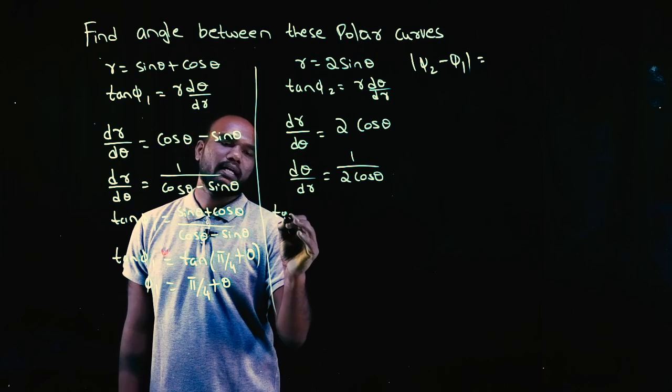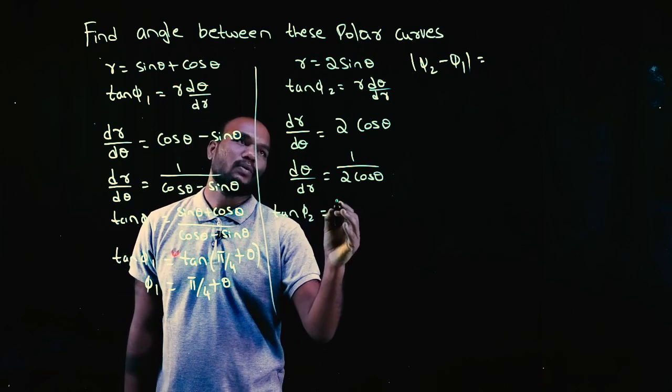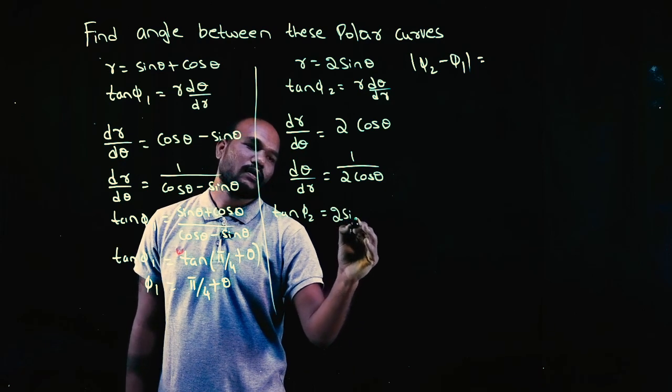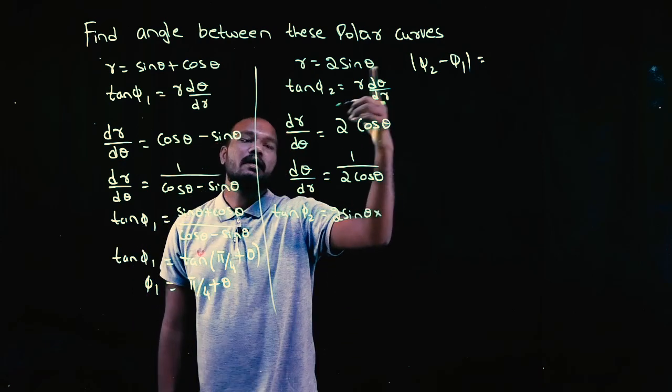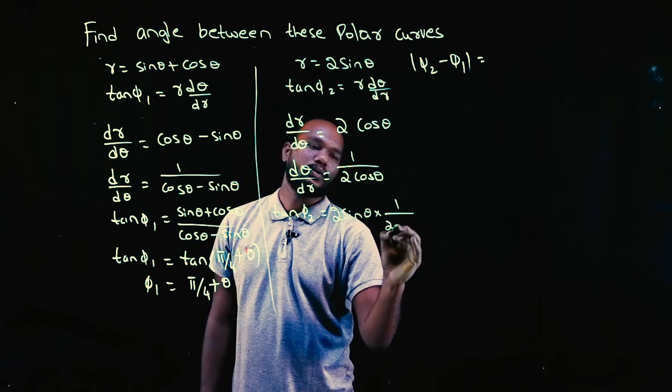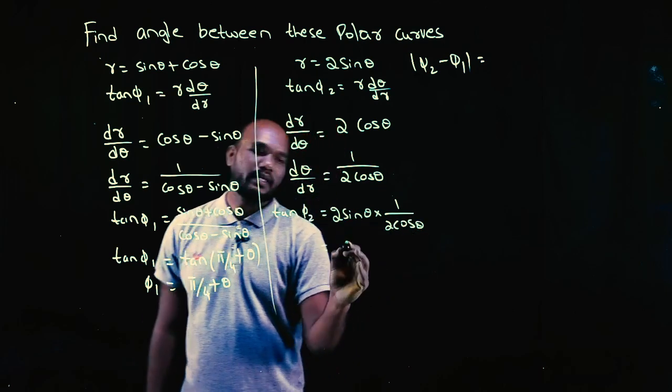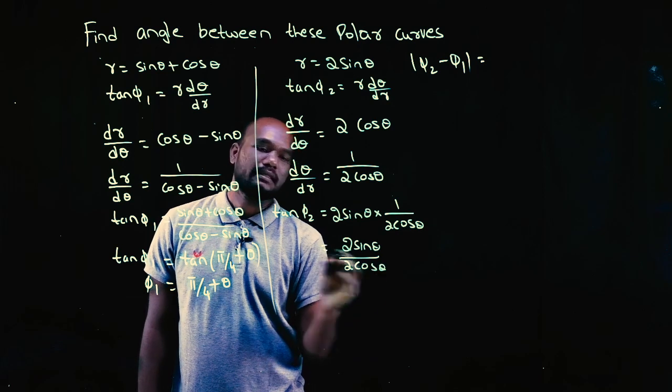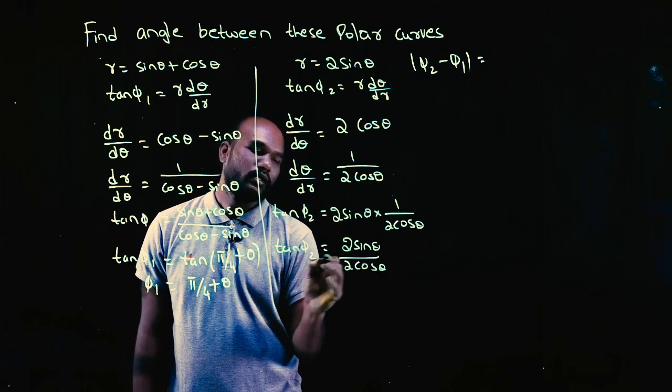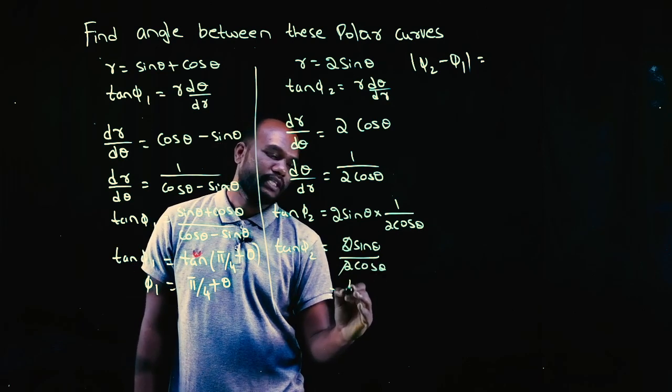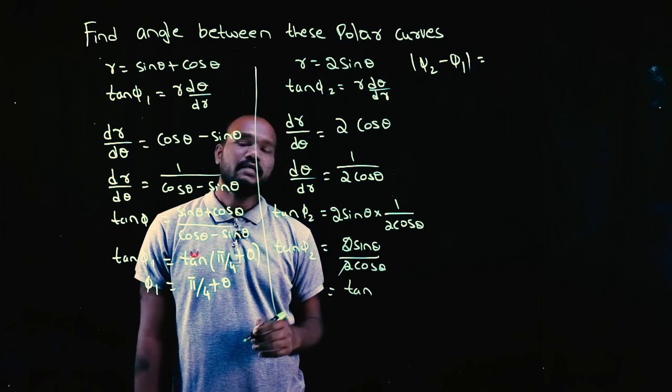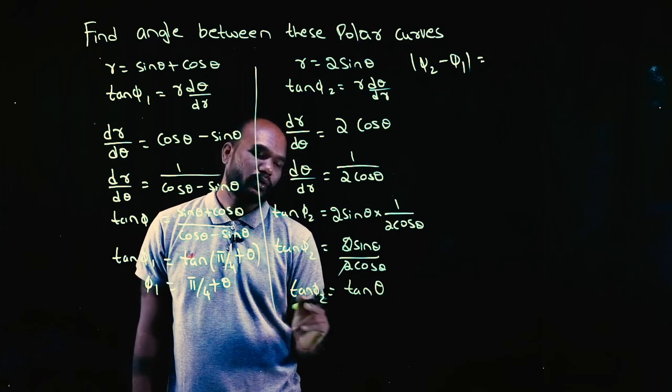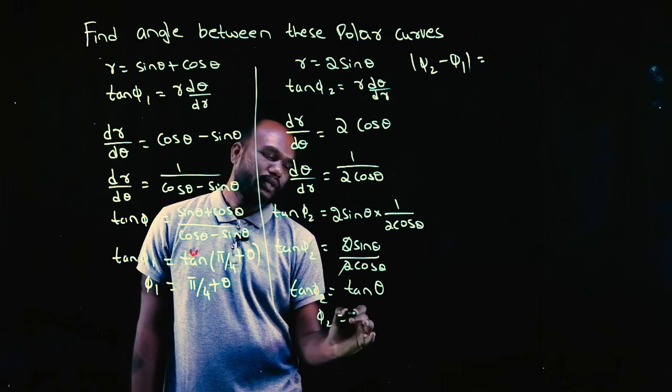Right, so tan phi 2 is equal to r times - what is r? 2 sine theta. What is d theta by dr? This term, 1 by 2 cos theta. So I can write 2 sine theta upon 2 cos theta equals tan phi 2. The 2s get cancelled. sine theta by cos theta is tan theta. So tan theta equals tan phi 2. Phi 2 equals theta.